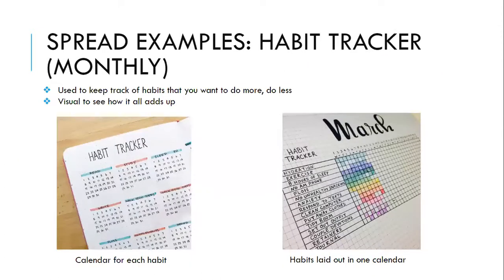Next, we have a habit tracker — this is usually done monthly. On the left side, there's a calendar for each habit: reading, studying, writing, walking, 5,000 steps. This person created a monthly calendar under each habit, and they would either highlight, circle, or cross off all the days in that monthly calendar that they did something. The right picture does the same thing laid out differently — it's a grid with all the habits in a list on one monthly calendar. It is a visual way to really see what you're doing every day.